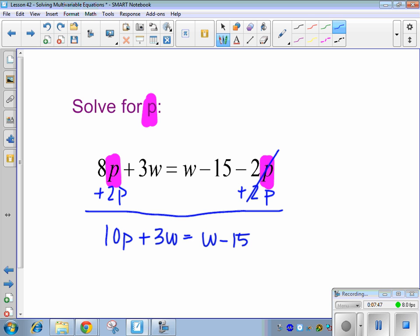Alright, now Evan, what's the next thing that you would do if you were solving this? By subtracting 3w. I like it. Sounds good to me. Alright, so I'd have 10p equals. These guys would cancel out. 1w minus 3w gives me what, Evan? Negative 2w. Good. Minus 15.